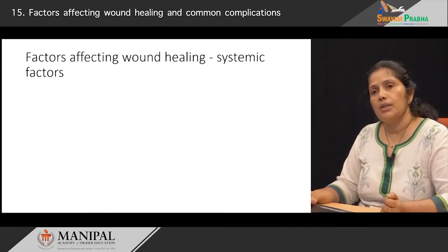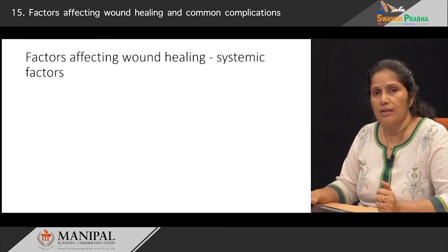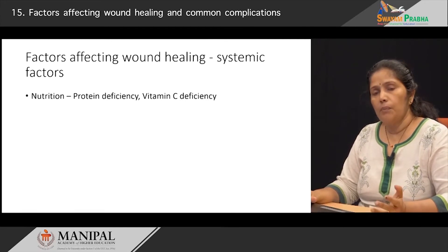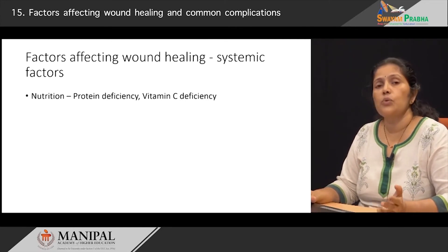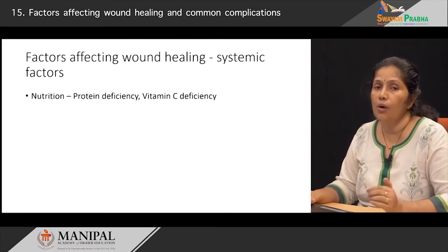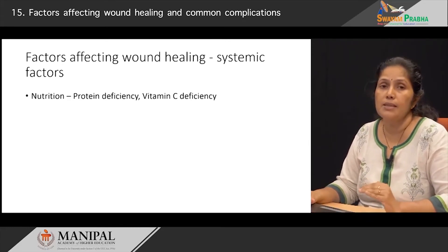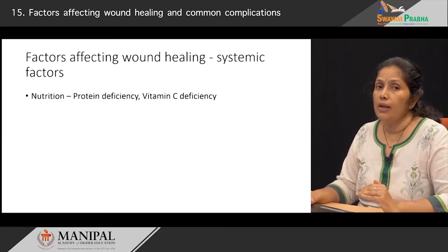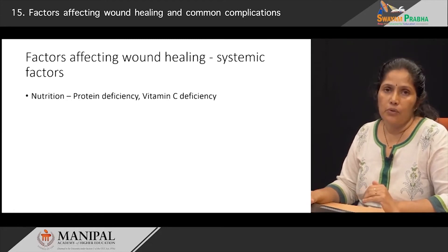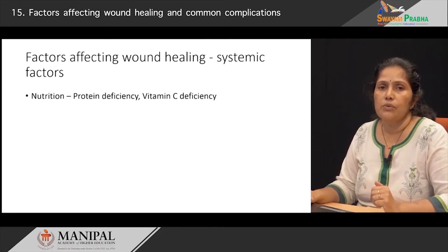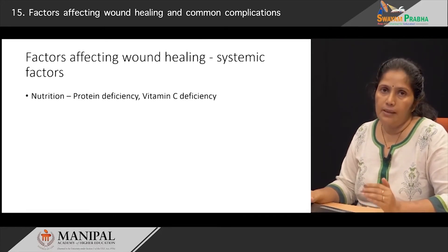Now let us look at some of the systemic factors — some diseases that the patient has which can prevent wound healing. Primary importance is the nutrition of the person. A good amount of protein is required for proper healing to occur, and along with that the presence of vitamin C also improves the healing process. Vitamin C is very important in the formation of collagen, and collagen formation is an important part of granulation tissue which helps to repair injuries.